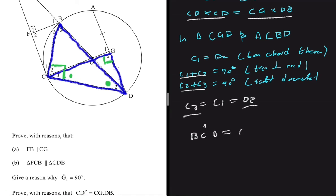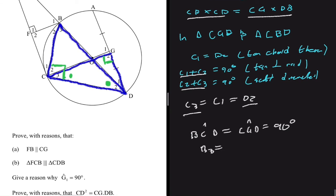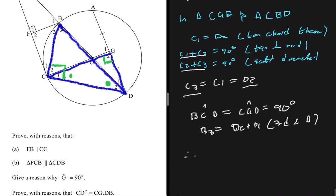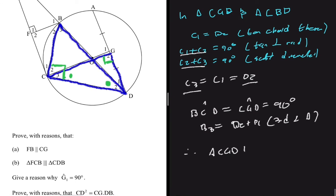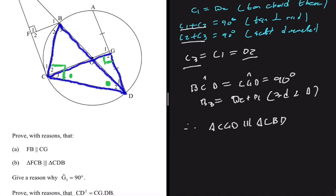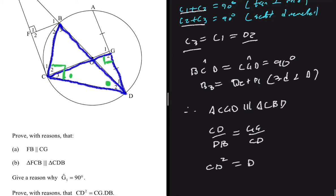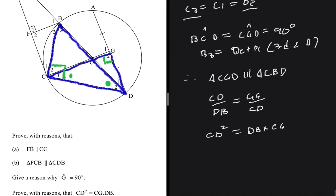Angle BCD equals angle CGD because both equal 90 degrees. Angle B3 equals angle D2 plus D1 as the third angles of the respective triangles. So we can conclude that triangle CGD is similar to triangle CBD. From this similarity we get: CD divided by DB equals CG divided by CD. Cross-multiplying gives CD squared equals DB multiplied by CG, which is what we needed to prove.